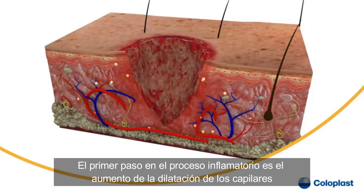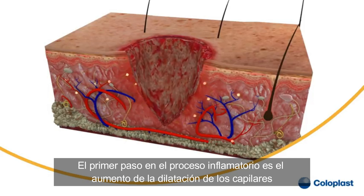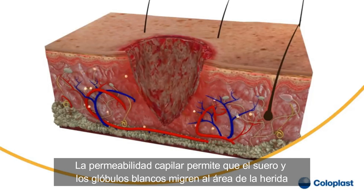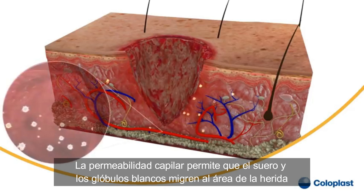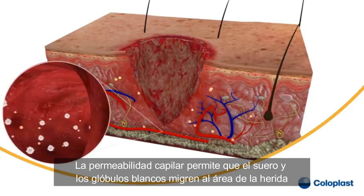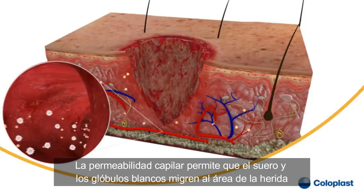The first step in the inflammatory process is dilatation of the capillaries. Increased permeability of the capillary allows serum and white blood cells to migrate into the wound area.